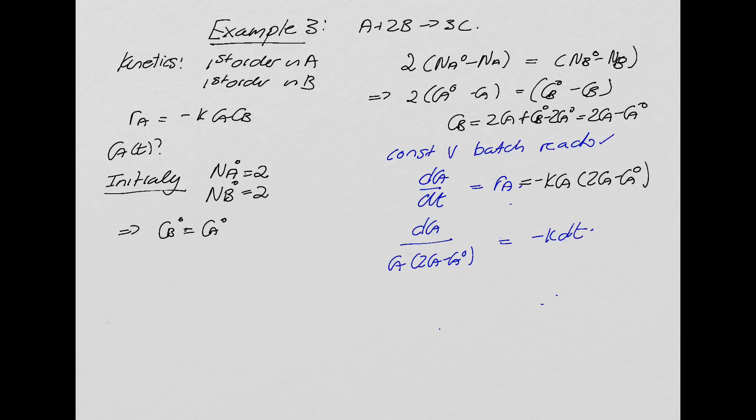Now, integrating that, we're going to need partial fractions. What do we need here? We have to split this into two partial fractions. So what we've got to do is write 1 over Ca(2Ca minus Ca0) in terms of two fractions, A over Ca plus B over (2 Ca minus Ca0). And what we've got to do is find the values for A and B. So what we're going to do is write that 1 over Ca(2 Ca minus Ca0) is equal to A times (2 Ca minus Ca0) plus B times Ca. In other words, we're going to find a common denominator.